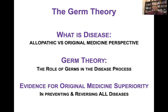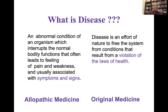The first thing we want to discover is: what is disease? There's the allopathic medicine approach and the original medicine approach. In the allopathic model, disease is an abnormal condition of an organism which interrupts normal bodily functions, often leading to feeling of pain and weakness, and usually associated with signs and symptoms. On the original medicine side, also called the natural healing or naturopathic side, disease is an effort of nature to free the system from conditions that result from a violation of the laws of health.